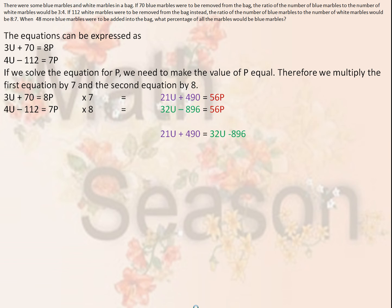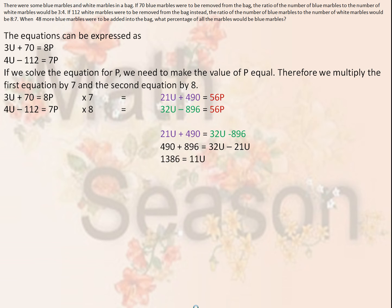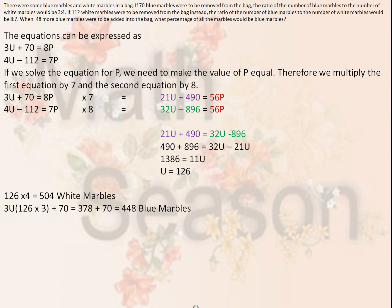Setting the two expressions equal: 21u plus 490 equals 32u minus 896. Solving for u, we get 11u equals 1386, so u equals 126. Therefore, white marbles equal 4u equals 126 times 4 equals 504. Blue marbles equal 3u plus 70 equals 378 plus 70 equals 448.